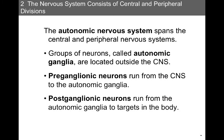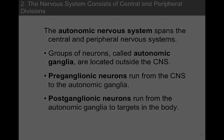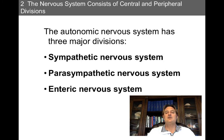The autonomic nervous system spans the central and peripheral nervous systems. Groups of neurons called autonomic ganglia are located outside the central nervous system. Preganglionic neurons run from the central nervous system to the autonomic ganglia, and postganglionic neurons run from the autonomic ganglia to targets in the body. The autonomic nervous system has three major divisions: the sympathetic, or fight-and-flight division; the parasympathetic, or rest-and-digest division; and finally, the enteric nervous system, which innervates the gut.